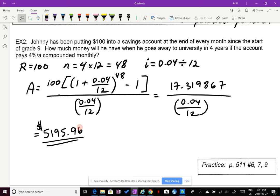Okay, compare that to just without interest, it's $100 every month. 48 months is $4,800. So with interest, you earn a little bit of extra money in there. Okay, so the final number is 5195.